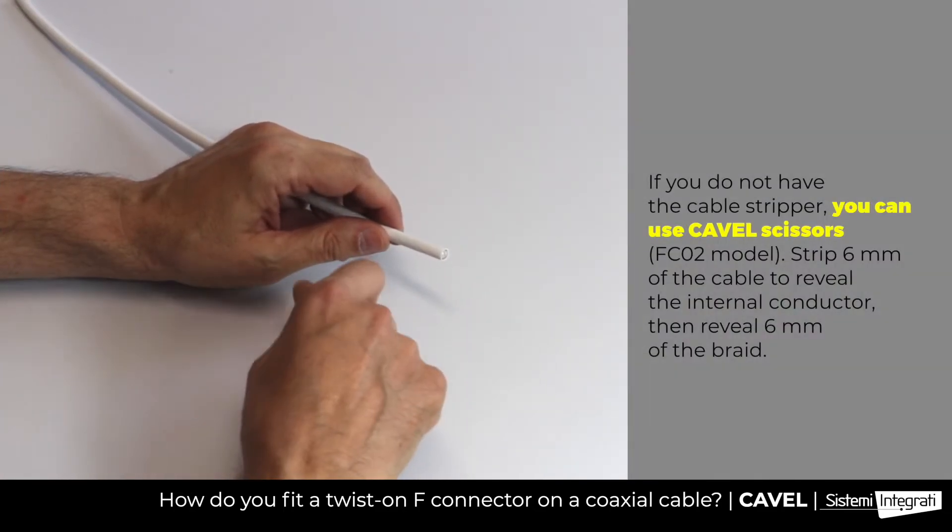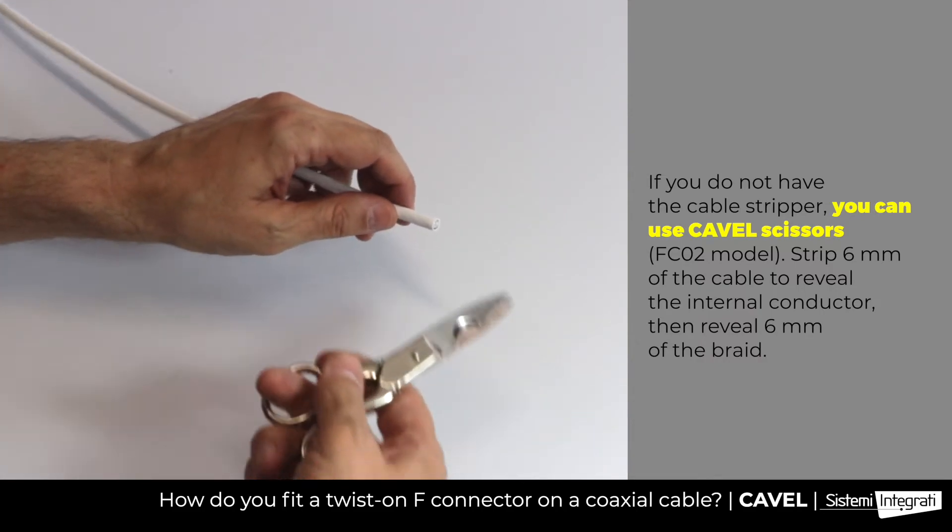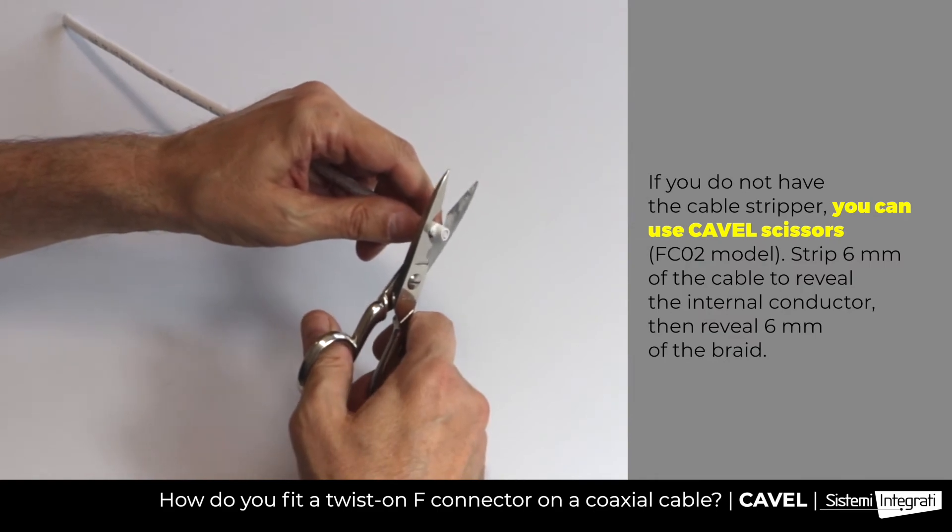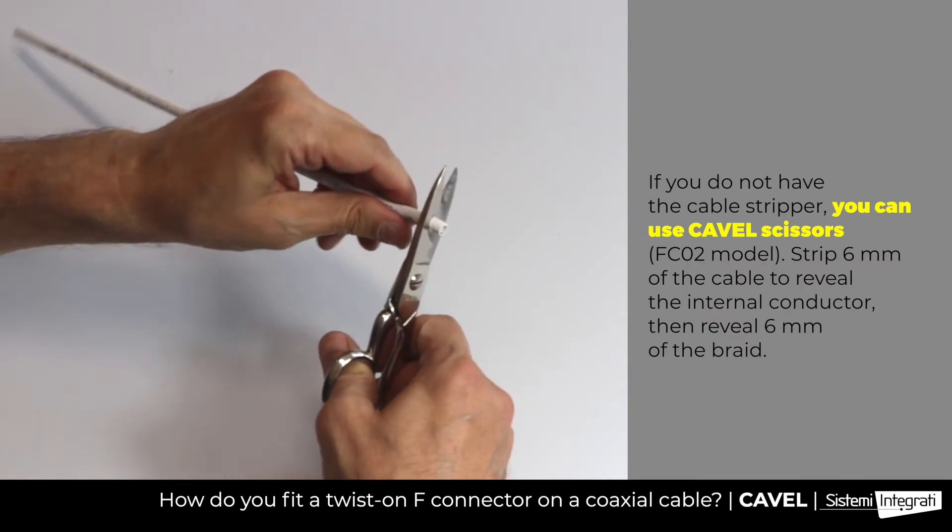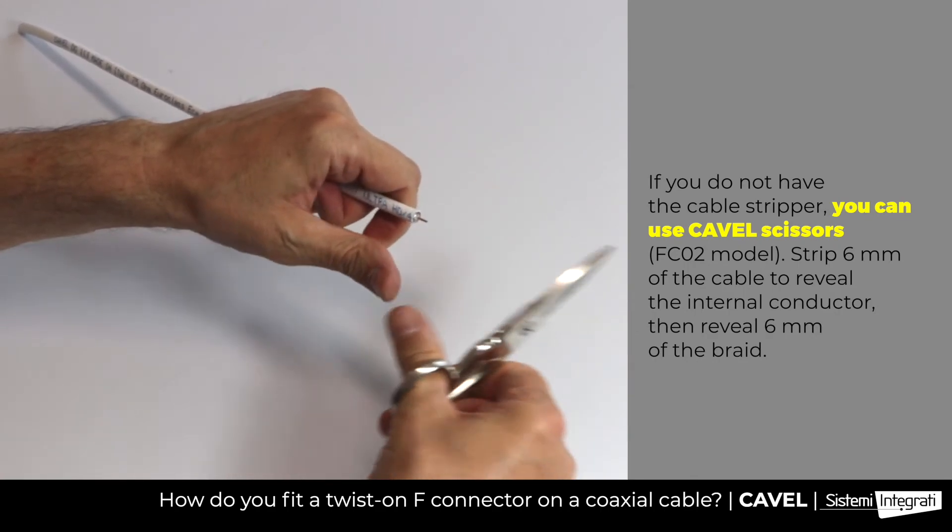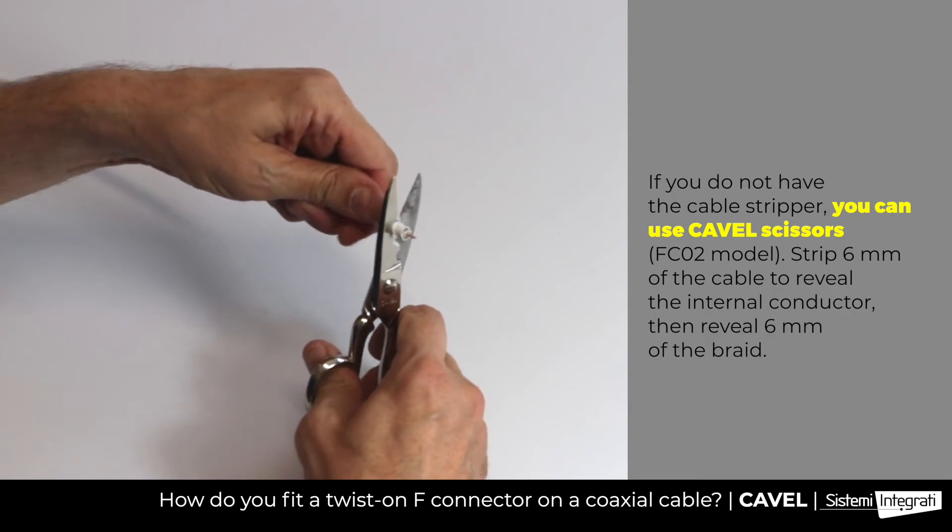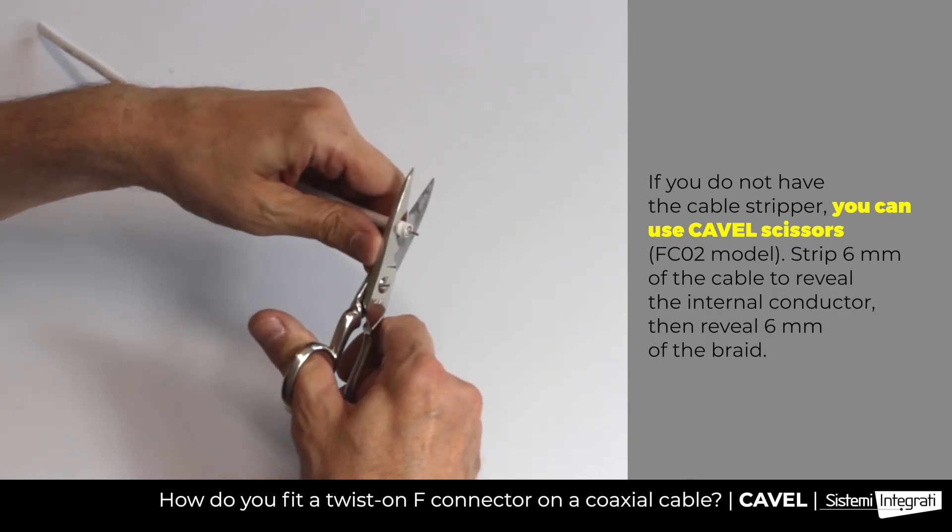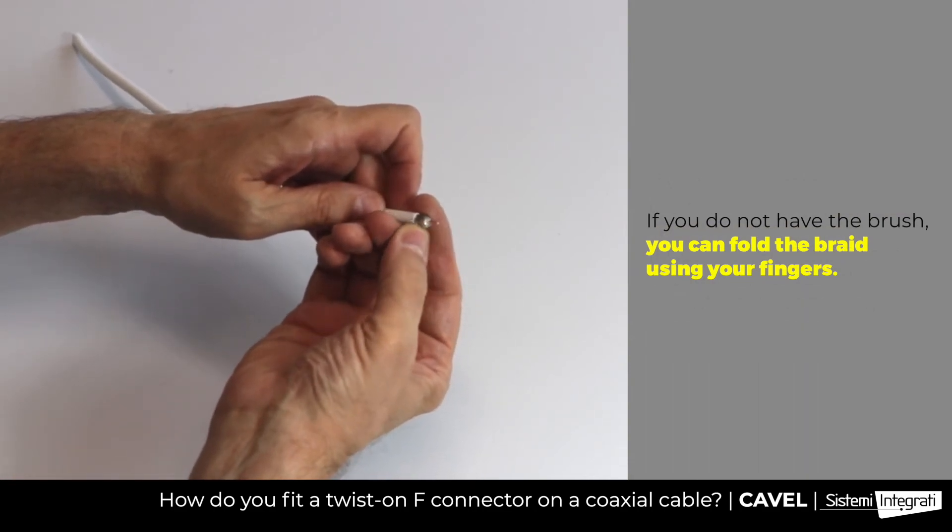As an alternative to the cable stripper, you can use Cavel scissors. You have to strip 6mm of the cable to reveal the internal conductor. Then reveal 6mm of the braid. Then fold the braid using your fingers.